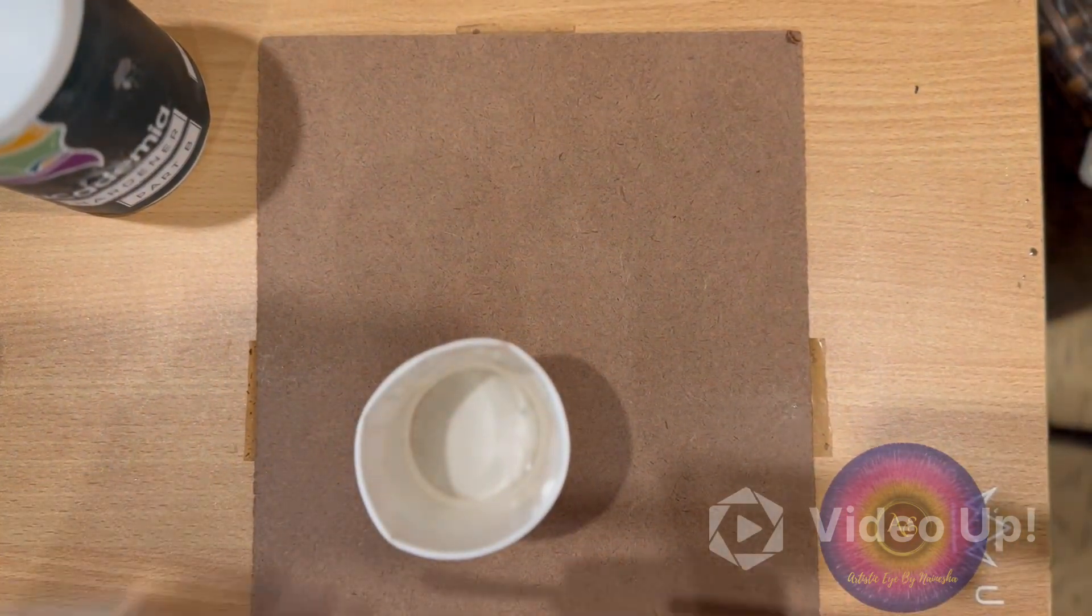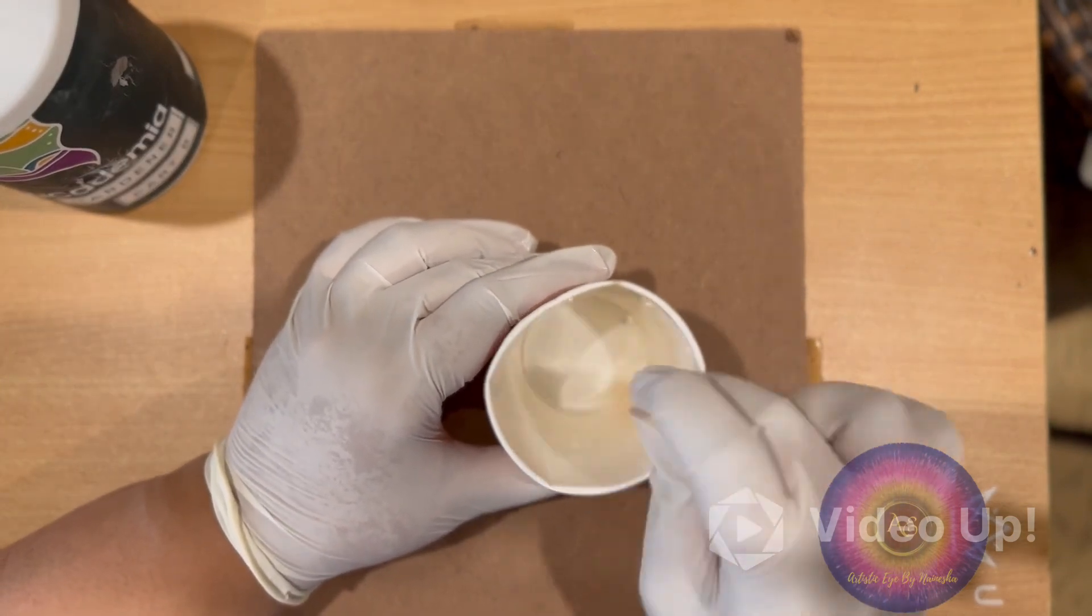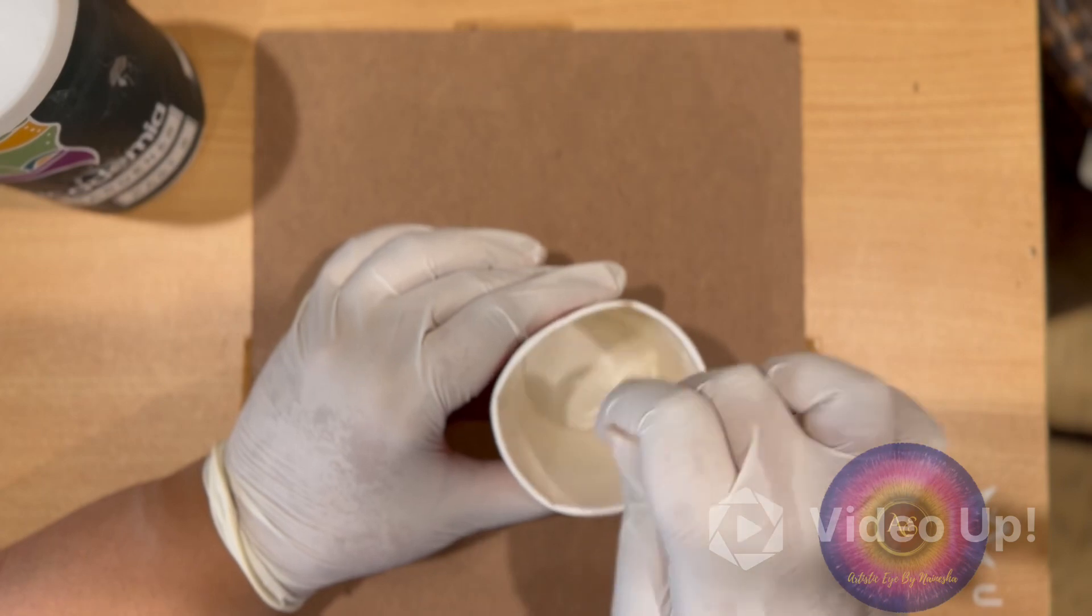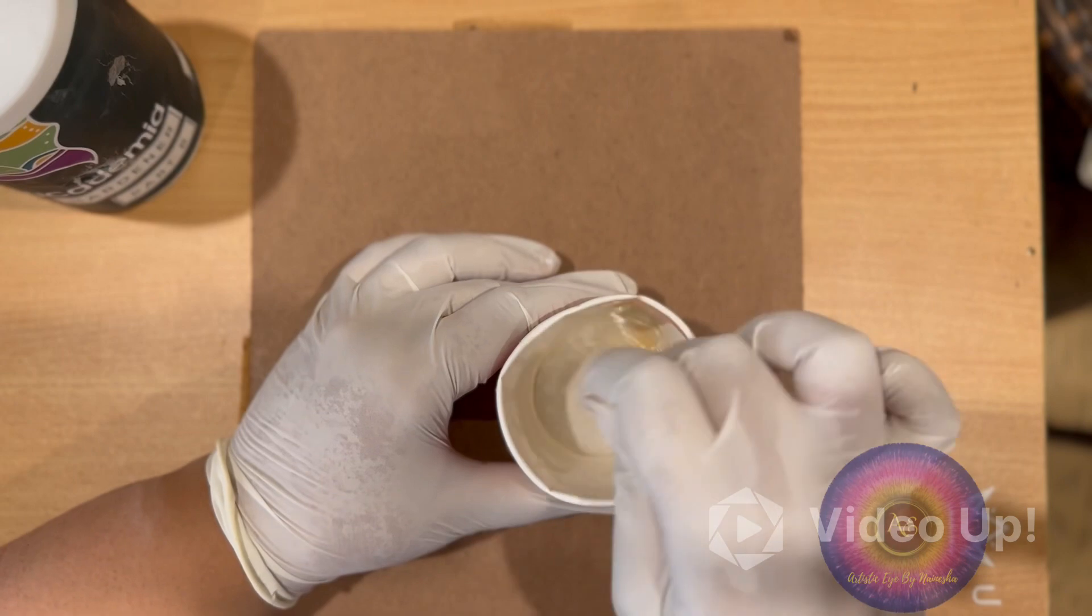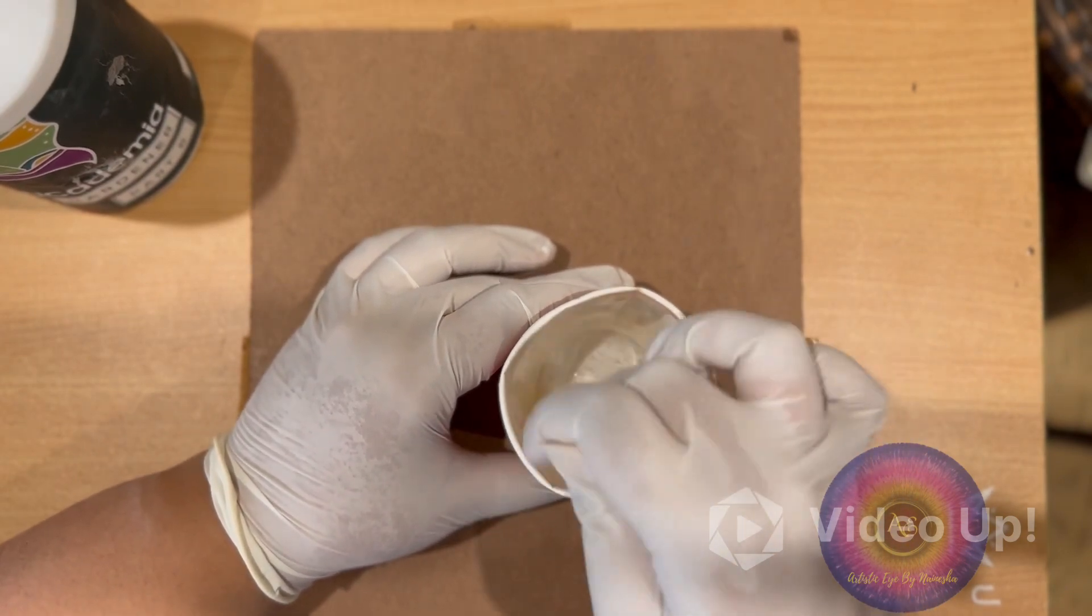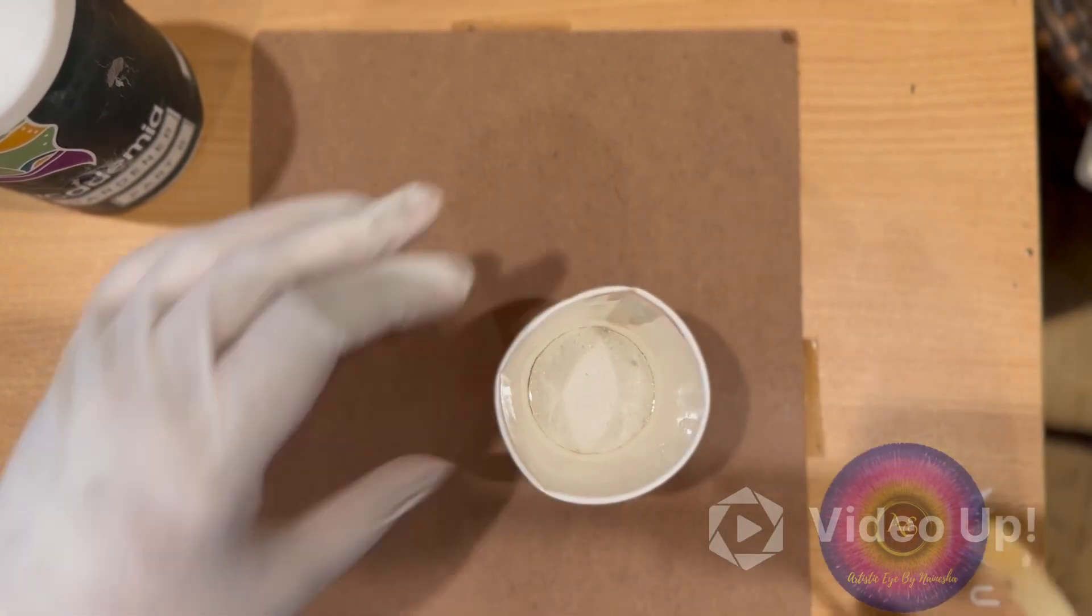Here's a tip for you guys: always mix the resin in one direction, either clockwise or anti-clockwise, so that you develop less bubbles in the resin and it's mixed really properly and well. Now I'm going to let it sit for 30 seconds so that whatever bubbles have come up settle down.